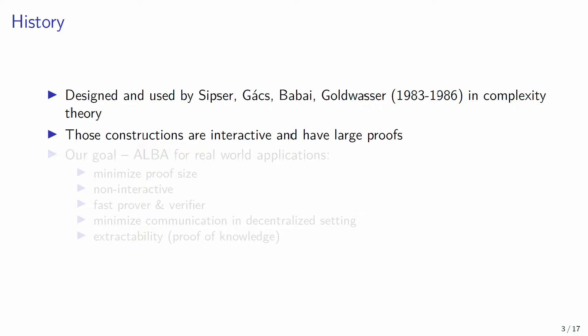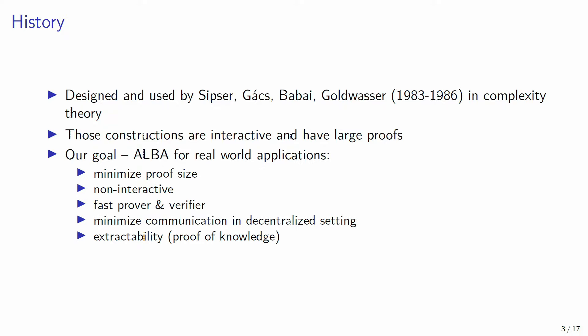We can generalize this by introducing weights: each element has an integer weight, we replace predicate r with a weight function w, and the new goal is for the prover to show the verifier he knows elements with total weight more than NF, given the prover knows elements of total weight NP. We call this problem approximate lower bound arguments, or ALBA. This primitive was designed and used in the 1980s in the context of complexity theory, but those constructions all have interaction and large proof sizes. We set our goal to construct this primitive for real-world applications, minimizing proof size, achieving non-interactivity, fast prover and verifier, minimizing communication in decentralized settings, and extractability formalized by proof of knowledge.